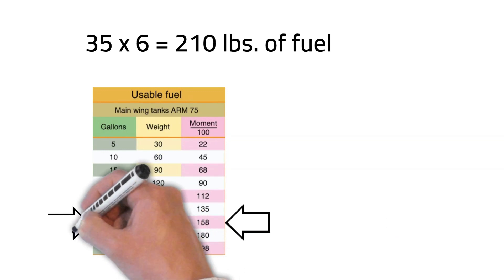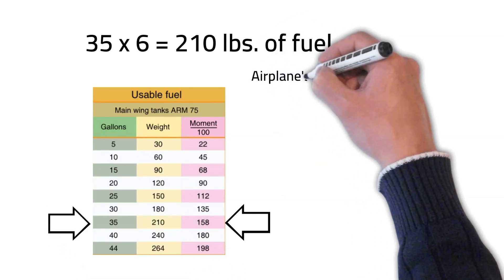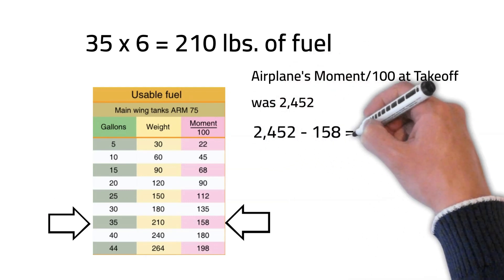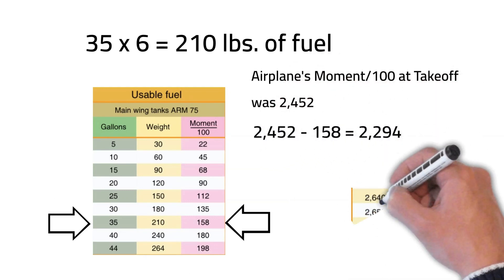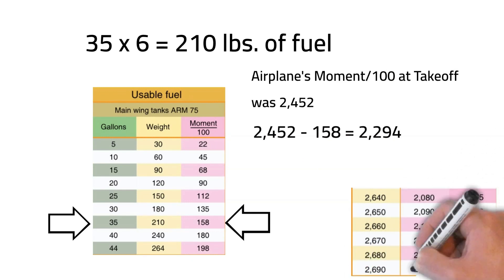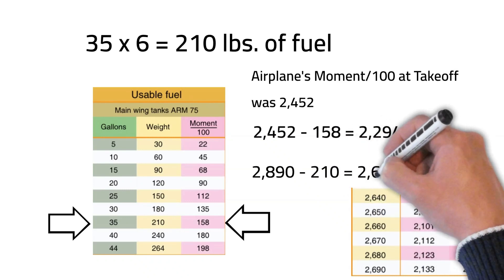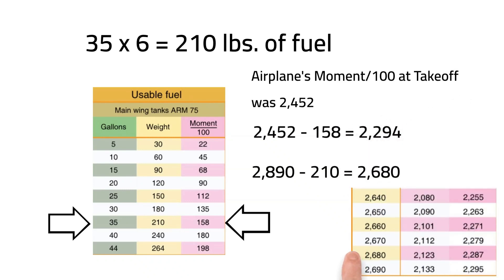To summarize, the aircraft's moment at takeoff was 2,452. We can subtract the fuel's moment of 158 to get the aircraft's moment after 35 gallons of fuel burn. The aircraft's moment after the 35 gallons of fuel burn is now 2,294. The aircraft's weight is reduced from 2,890 pounds to 2,680 pounds.